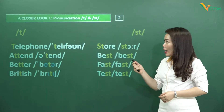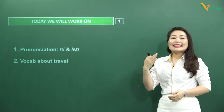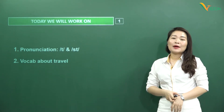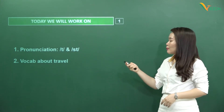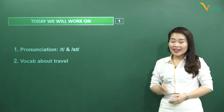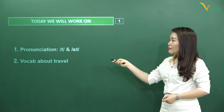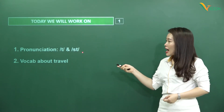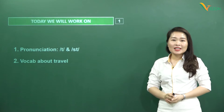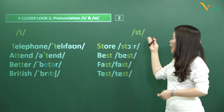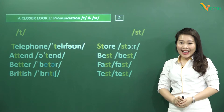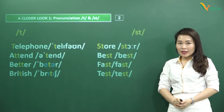Last time we got familiar with the sound pairs /ɪ/ and /iː/ — the short 'y' and the long 'y'. Today we are going to get familiar with another pair. The /t/ sound in English is similar to the 't' sound in Vietnamese; however, in English it is aspirated more strongly.